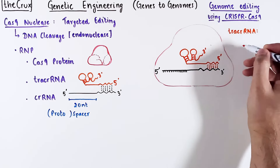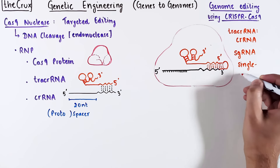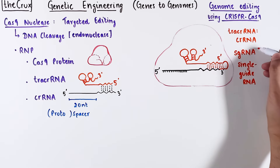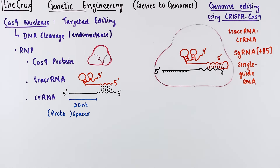Typically in practice, the tracrRNA and CRISPR RNA are combined through a stem loop structure to get a single RNA called single guide RNA (sgRNA). When this was created, researchers made a handful of variations, and the plus 85 tracrRNA tail structure worked the best. So in literature, you may see sgRNA being referred to as the plus 85.